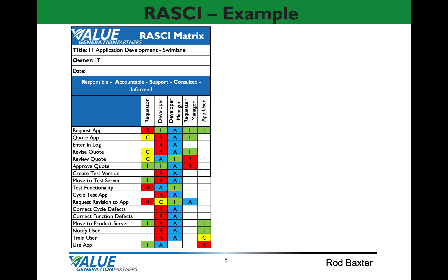Here's the RASCII matrix with all the process steps or activities from the swim lane map and all the positions or functions associated with IT application development. For the first process step, the requester is responsible to request the application, the developer manager is accountable, and the developer, requester manager, and app user are informed once the request has been completed. For the next step — the quote — the requester is consulted, the developer is responsible, the developer manager is accountable, and the requester manager is informed. For each process step, we would then assign a responsibility for those positions associated with that step.